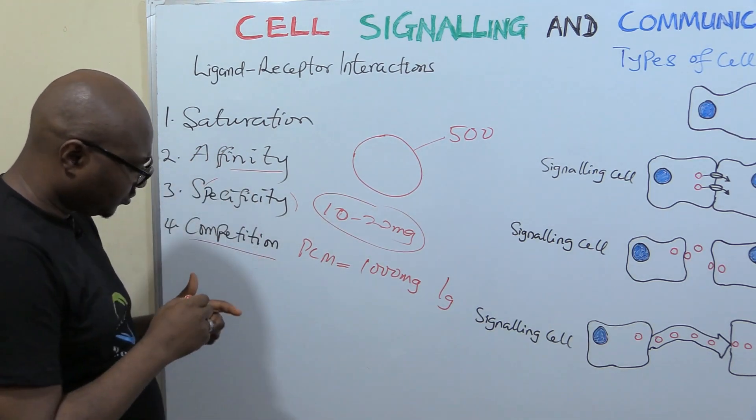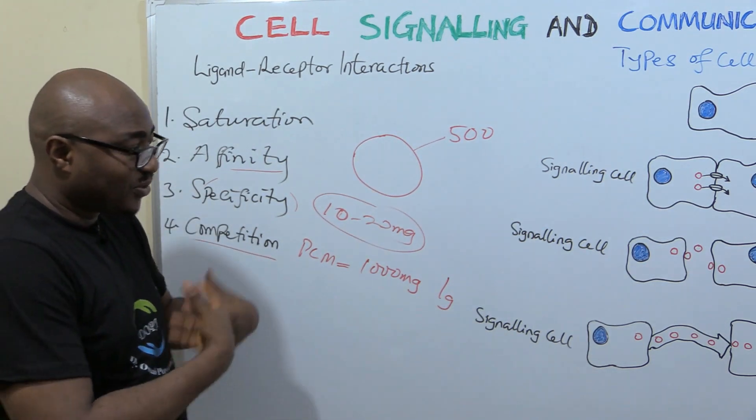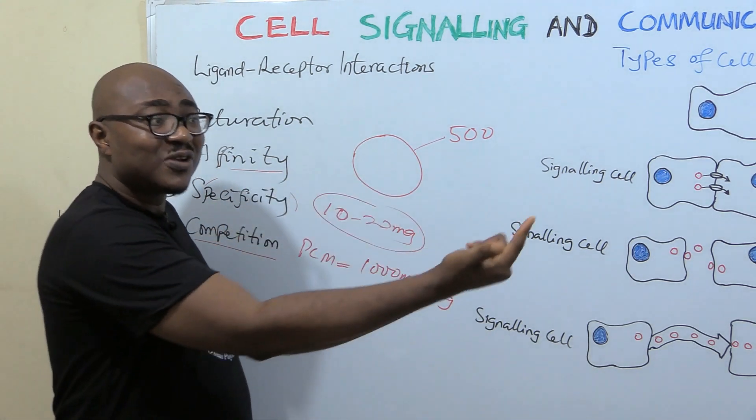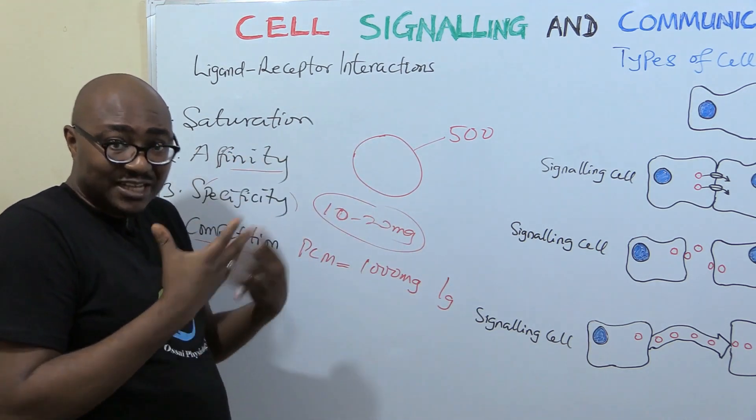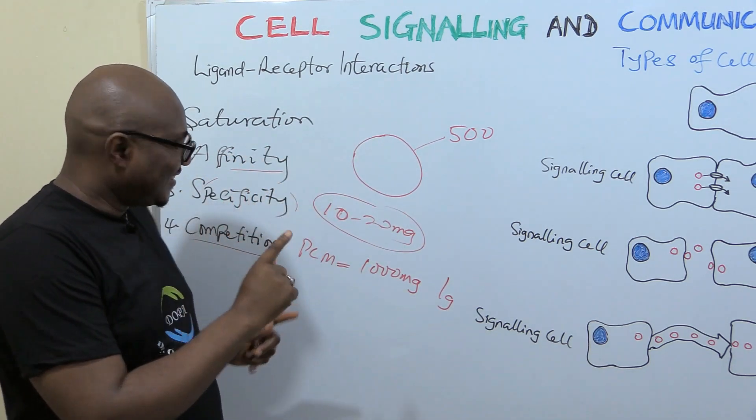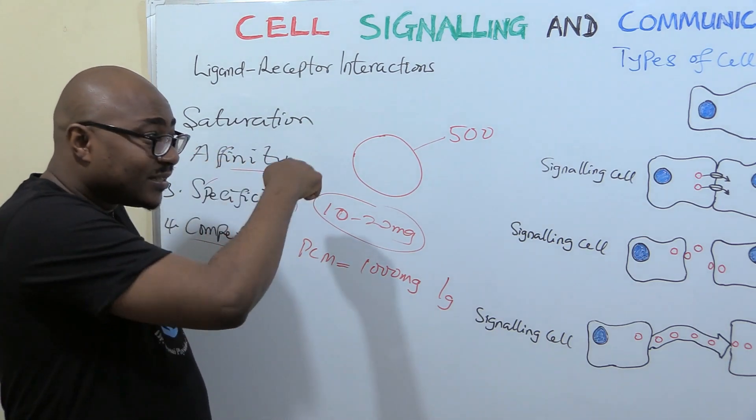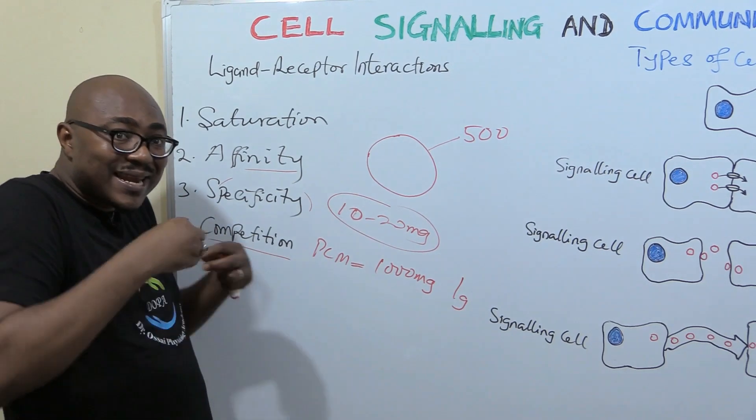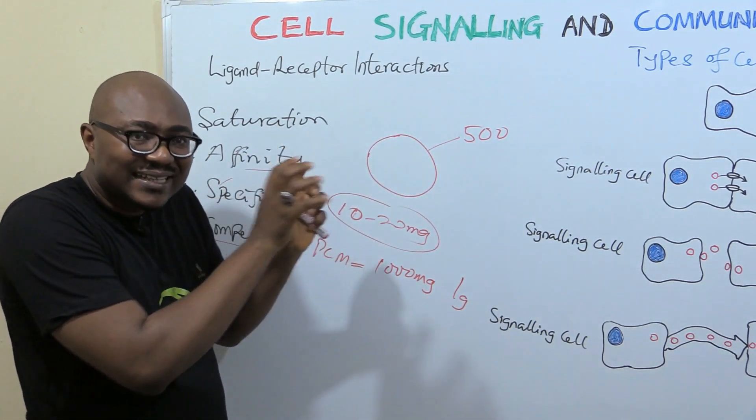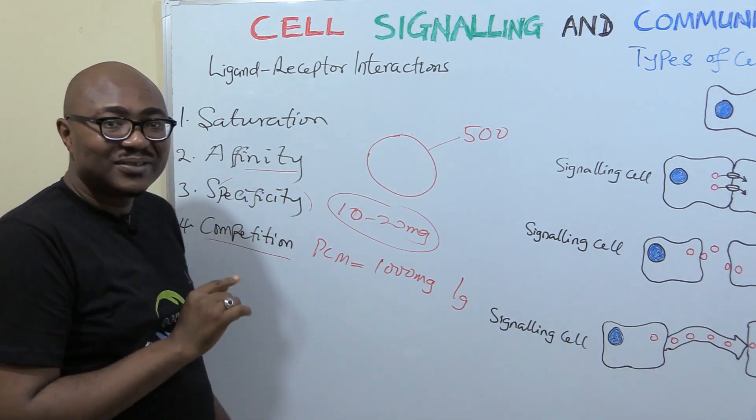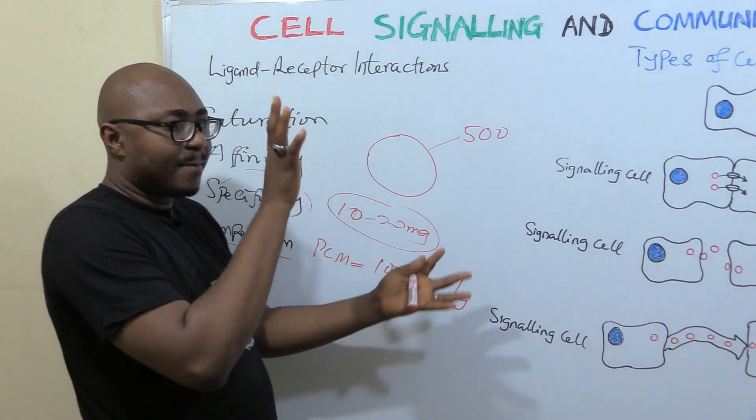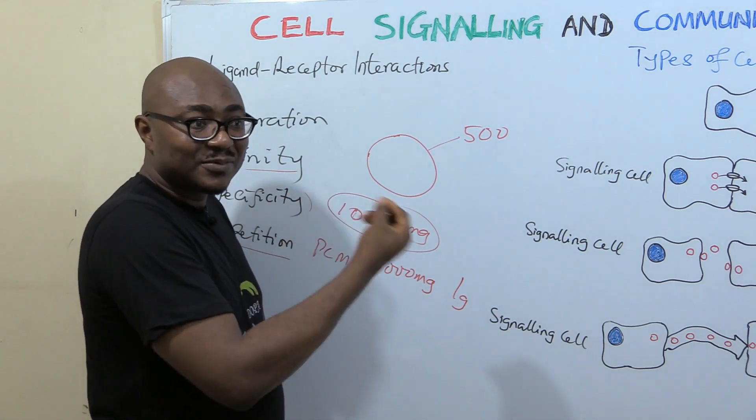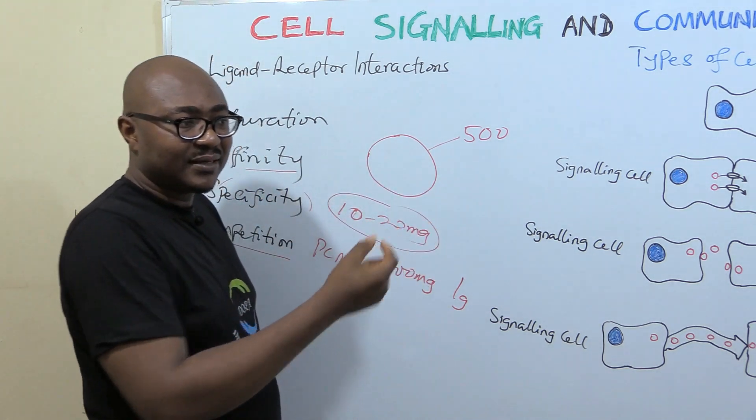Competition has to do with the fact that the body has its own ligands, chemical messengers, but you can also have foreign chemicals like drugs that have similarities with the ligands inside the body. They will go and be competing with the natural ligands for binding at receptor sites. Sometimes those drugs can come and bind and prevent the natural ones from having the response.